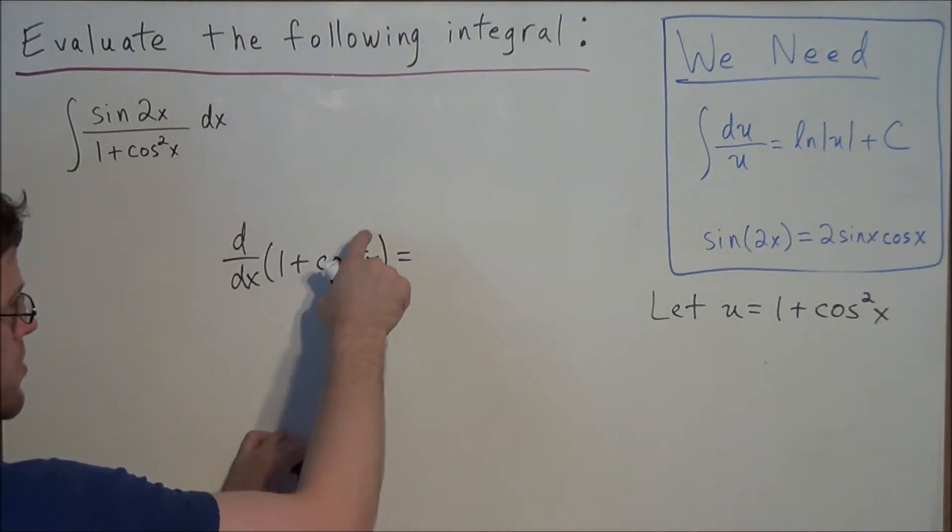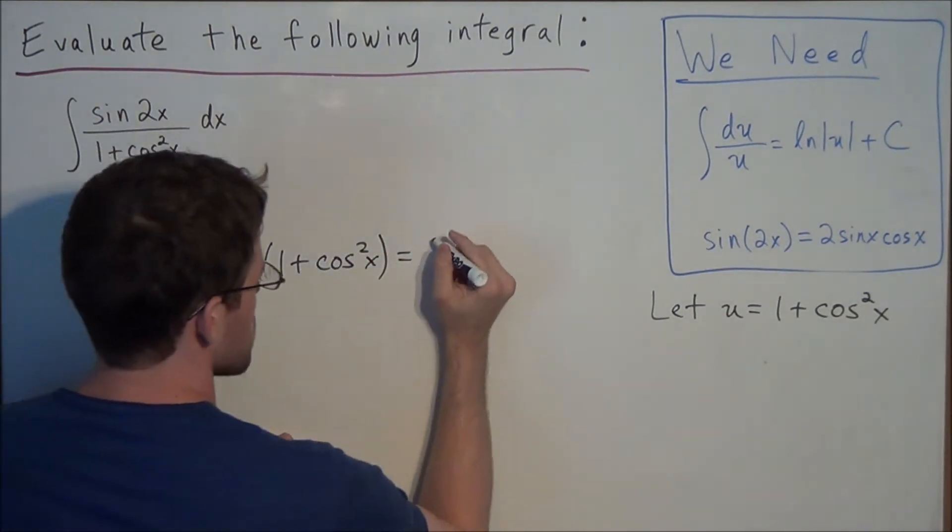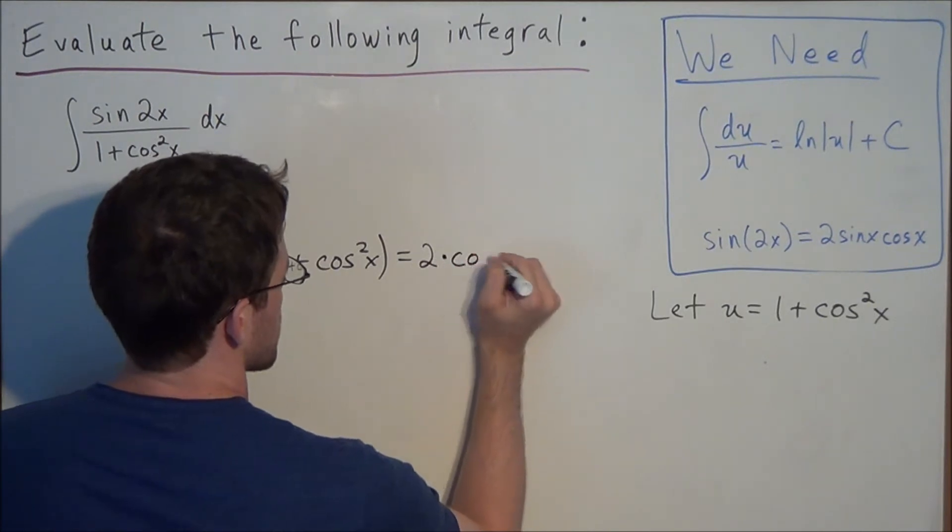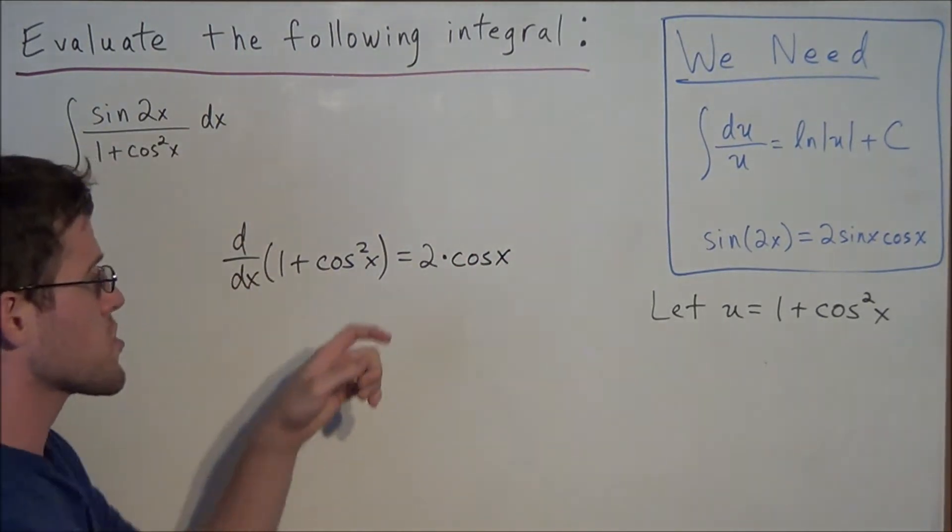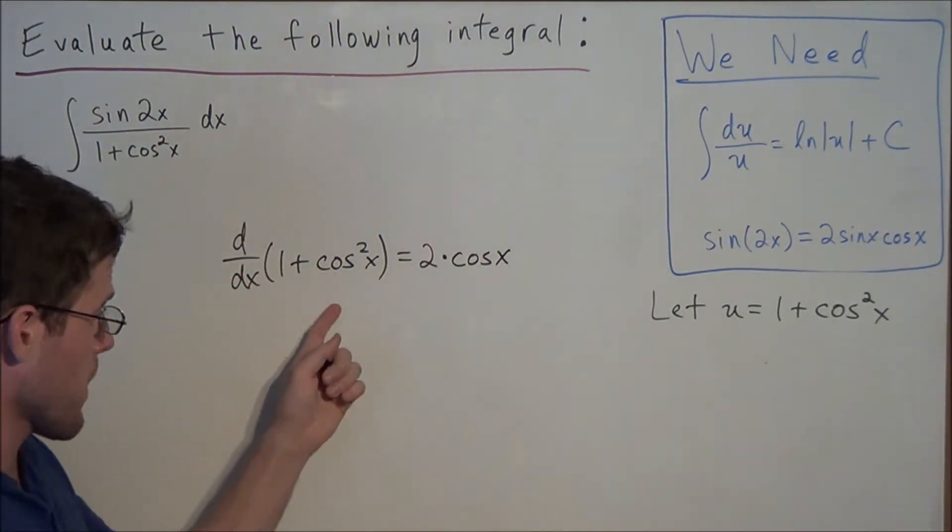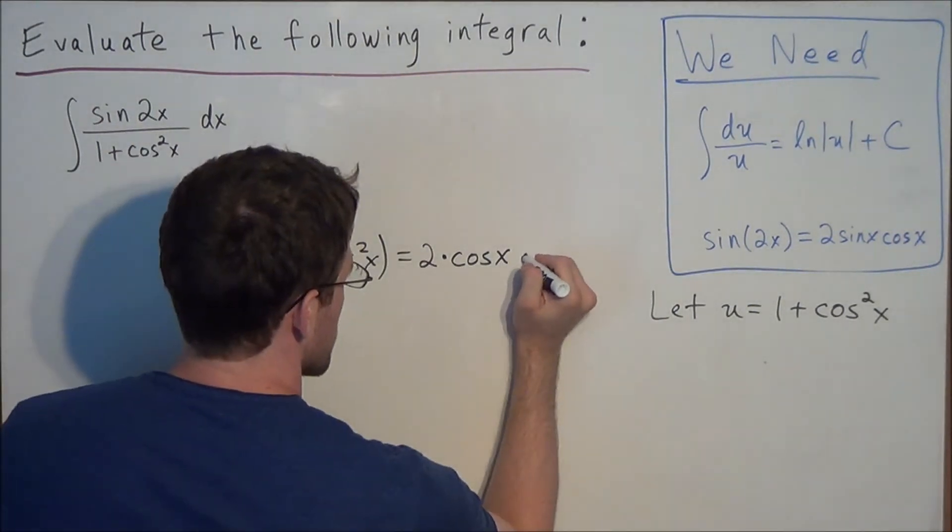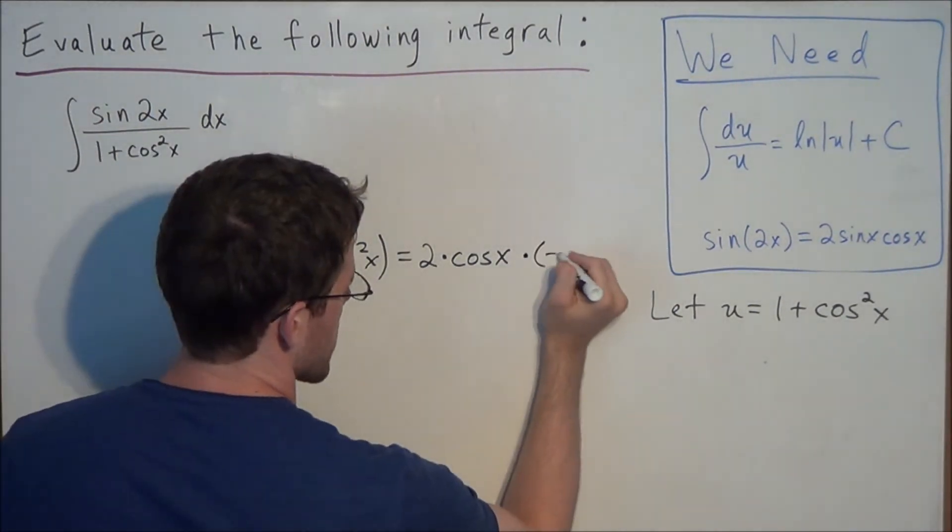So we're looking at the exponent of 2, so we're going to multiply. We have 2 times cosine x to the 2 minus 1, or to the first power, times the derivative of cosine x, which is negative sine x.